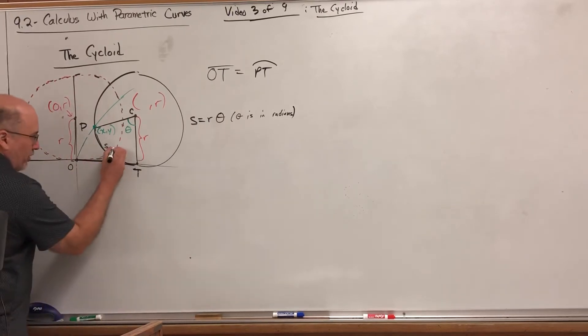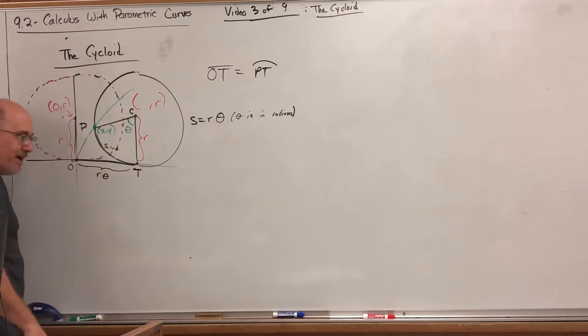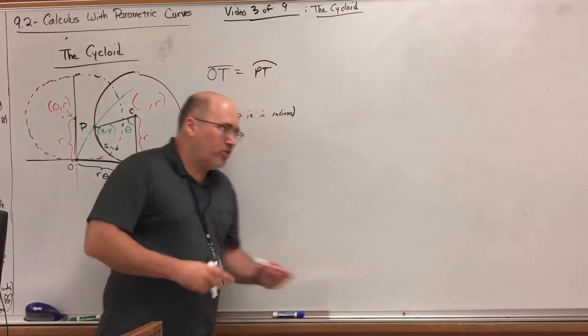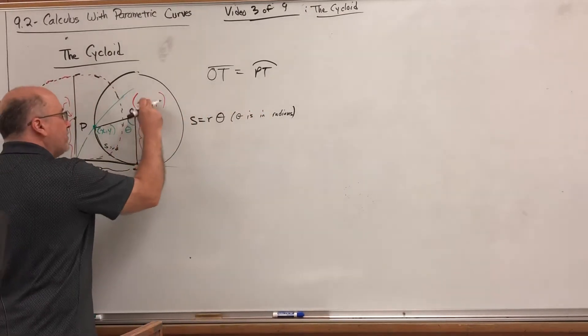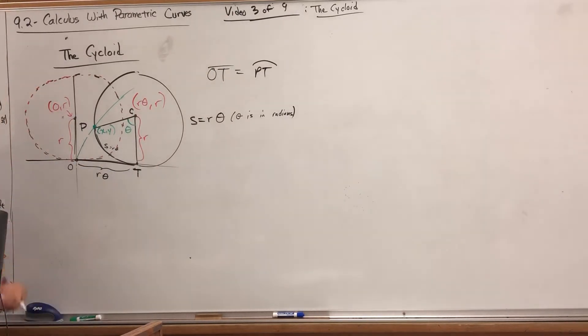If s equals r theta, that means this distance equals r theta, which means that's the x-coordinate of the center of the circle after it's rotated. That's a good start, but how are we going to finish this?